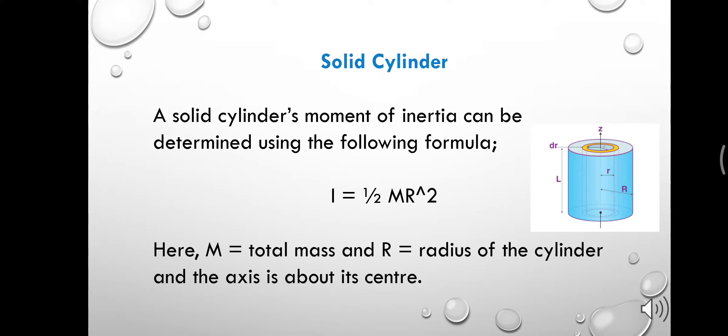For determining the moment of inertia of a solid cylinder, we use the formula I equals to half MR square, where M equals to total mass and R equals to radius of the cylinder and axis.